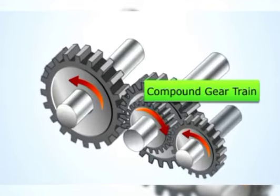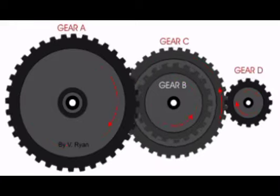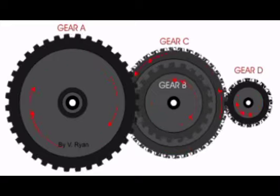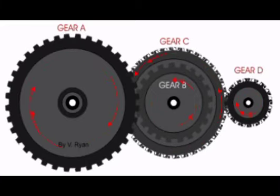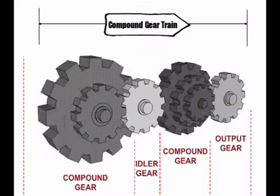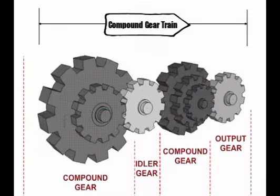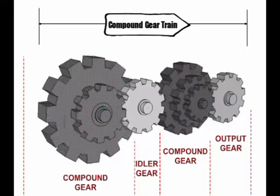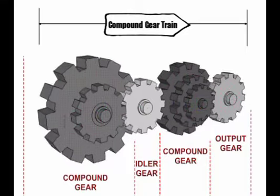Now consider a compound gear train with gears A, B, C, and D. When we impart motion to gear A, we see it gets transmitted to gear B, then gear C, and finally to gear D. Here gear A is called the driver gear and gear D is called the driven gear. Gears B and C are called intermediate gears or idler gears.